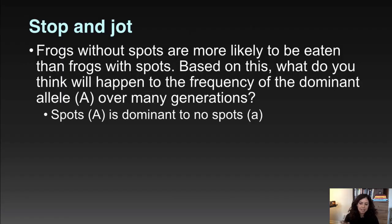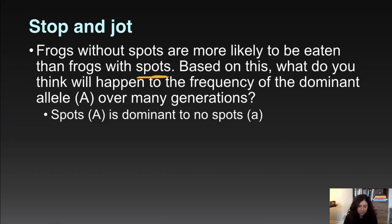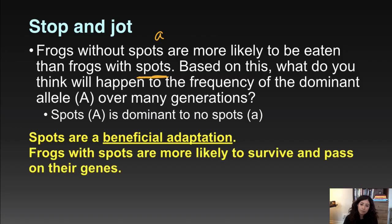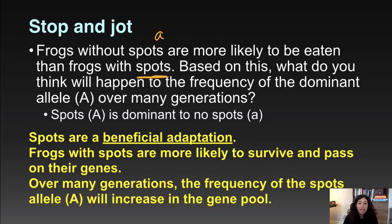There's a question in the Google Doc: frogs without spots are more likely to be eaten than frogs with spots — what will happen to the frequency of the dominant allele over many generations? Frogs without spots are more likely to get eaten, so if a frog is homozygous recessive, they're more likely to be eaten. Spots are a beneficial adaptation — frogs with spots are more likely to survive and pass on their genes. Over many generations, the frequency of the big A allele is going to increase in the gene pool. That's evolution.